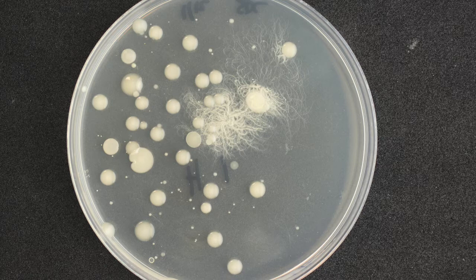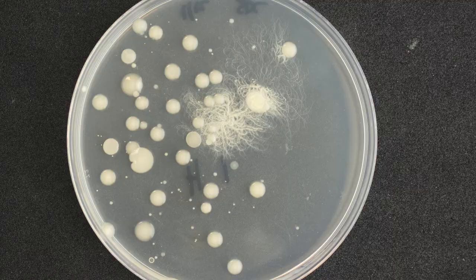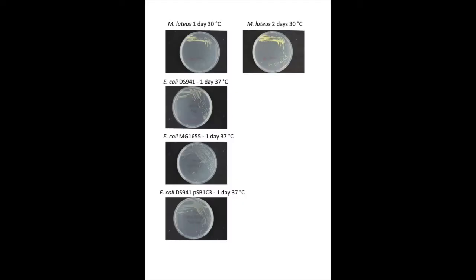After watching this video, have a look at the rest of the plates on Moodle. You should also take a look at the streaked plates for M. luteus and E. coli. Note how M. luteus grows more slowly than E. coli and forms yellow colonies.